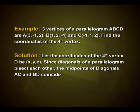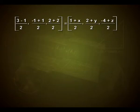Since diagonals of a parallelogram bisect each other, the midpoints of diagonals AC and BD should coincide. So (3−1)/2, (−1+1)/2, (2+2)/2 will be equal to (1+x)/2, (2+y)/2, (−4+z)/2.